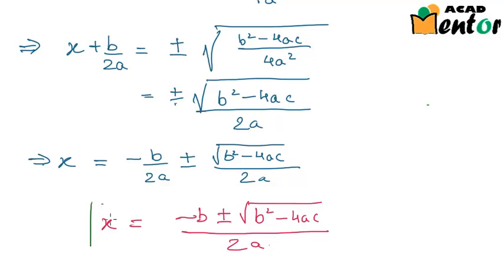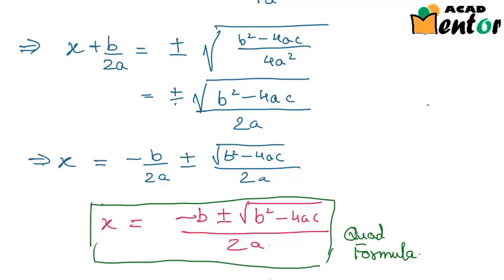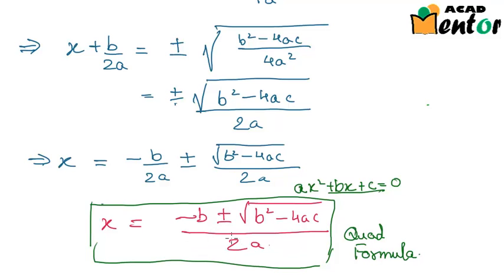This is called the quadratic formula. It can be used to solve any quadratic equation of the form AX² + BX + C = 0. The two roots are X = [−B + √(B² − 4AC)] / 2A and X = [−B − √(B² − 4AC)] / 2A. These are the two roots, and we can apply this formula to find the roots of any quadratic equation.